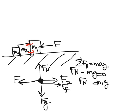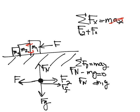And in the X direction, I have sigma FX equals M AX. Again, it says constant speed, so AX is 0, and I have F2, which is what I'm looking for, plus FF minus F is equal to 0.